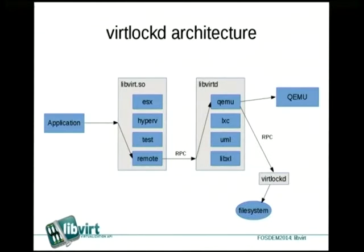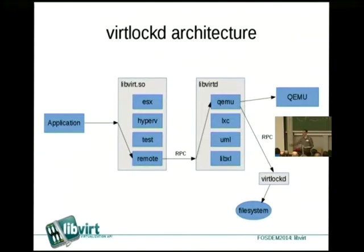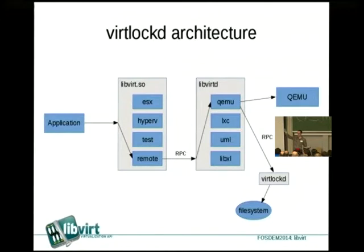Looking at the architecture with virtlockd added, not much changes. The QEMU driver inside LibVirt talks to the virtlockd daemon using a simple RPC mechanism. Whenever you start a guest, it first talks to virtlockd to acquire locks for all disk images, and only if that succeeds does the QEMU process actually start. These locks are also released and reacquired whenever you pause the virtual machine, which is key to making migration work.